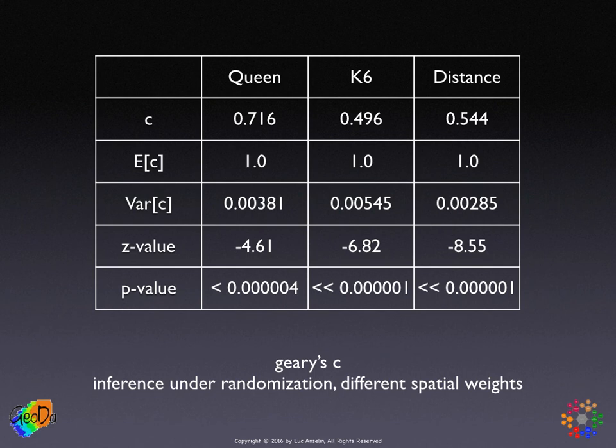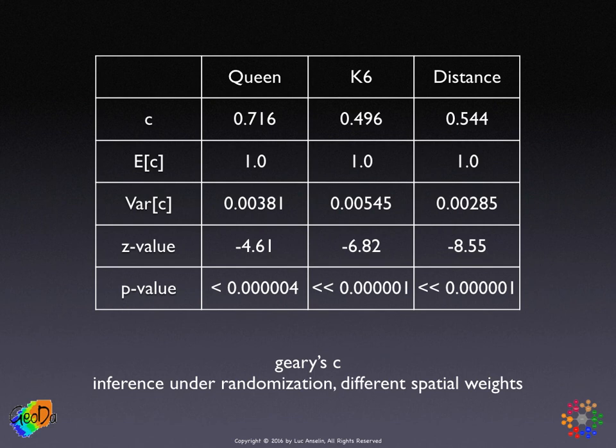The variances are fairly complex expressions under randomization — they depend on the weights and on the random variable under consideration. The Z values are obtained in the same way. Just like the C values being less than 1, all the Z values are negative, pointing to positive spatial autocorrelation. So that's a little bewildering, but it's good to keep in mind in case you want to use Geary's C.